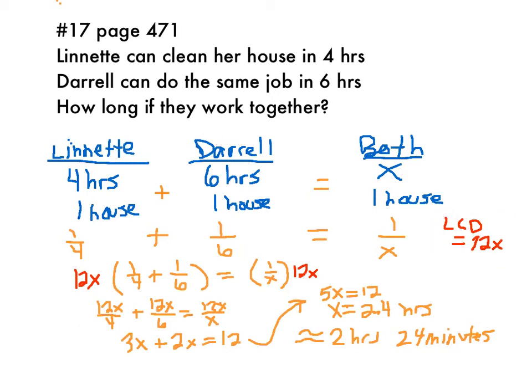When you multiply both sides by that, you need to remember to distribute. Here I distribute the 12x to both of those terms to get 12x over 4 plus 12x over 6. And here we only have to distribute it to one term, so you just multiply the numerators. When you simplify this, 12x divided by 4 simplifies to 3x, and 12x divided by 6 simplifies to 2x, and 12x divided by x simplifies to 12. What you're left with is a one-variable equation.